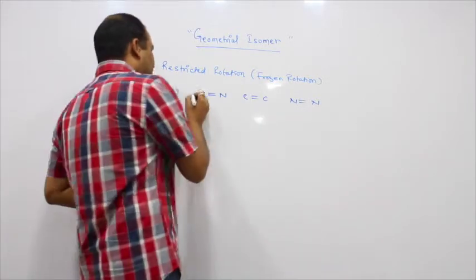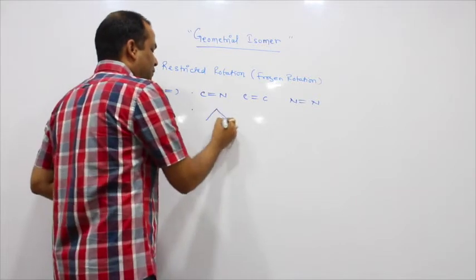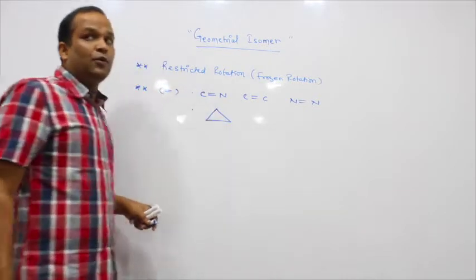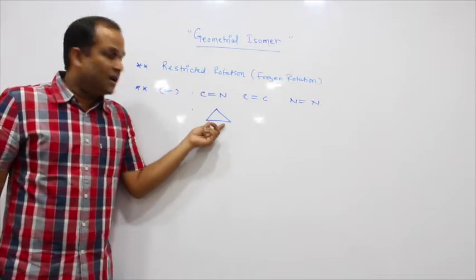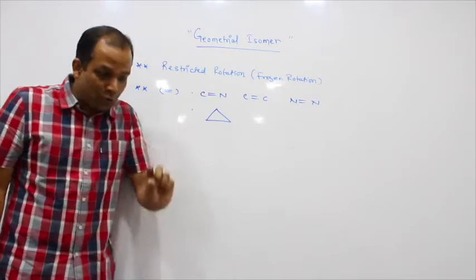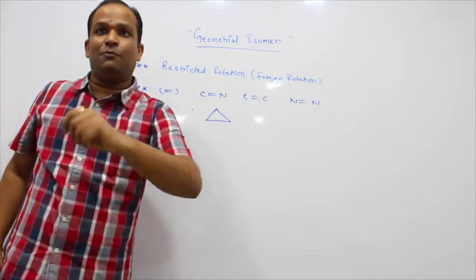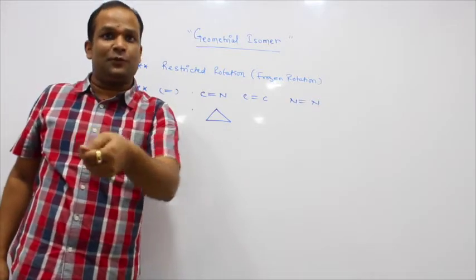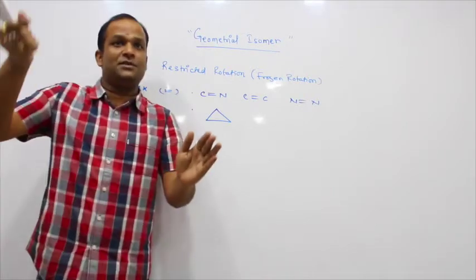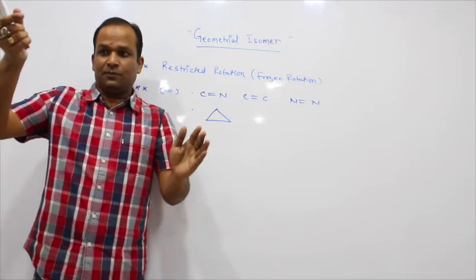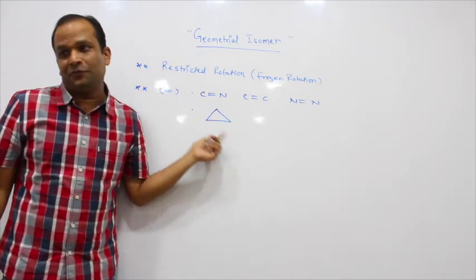If we talk about restricted rotation in the case of a single bond, how do you rotate it? It is possible in cycloalkane. Because in cycloalkane, if you have to rotate this bond, it will only rotate if you break it first and then rotate it completely. So again there is a breaking of the bond.